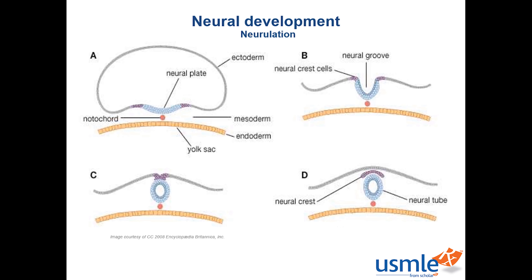Embryogenesis is a process lasting eight weeks. It begins after fertilization and implantation. The amniotic cavity, yolk sac, embryonic mesoderm, and chorionic cavity develop during the second week, after which a trilaminar embryonic disc differentiates through gastrulation in weeks 3 and 4.